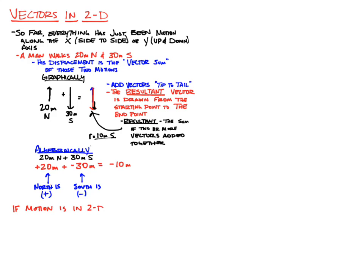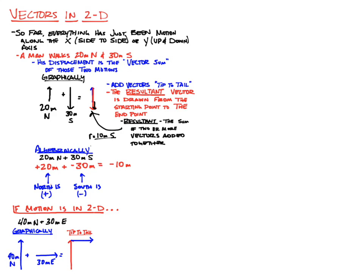Now, if the motion is in two dimensions, it's a little more complicated. For example, going 40 meters north and then 30 meters east — graphically, we draw those two vectors and add them tip to tail. Our resultant connects the beginning point to the end point. To calculate it algebraically, it's going to be the square root of 30 squared plus 40 squared. We cannot just add these two things together because they're not along a line.